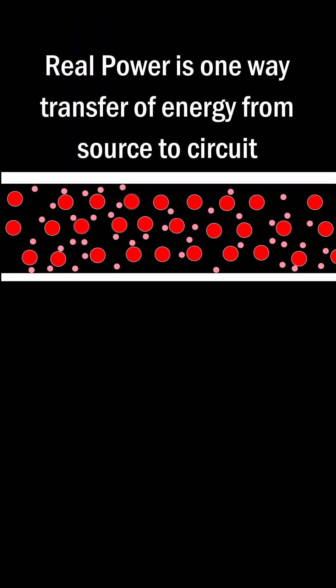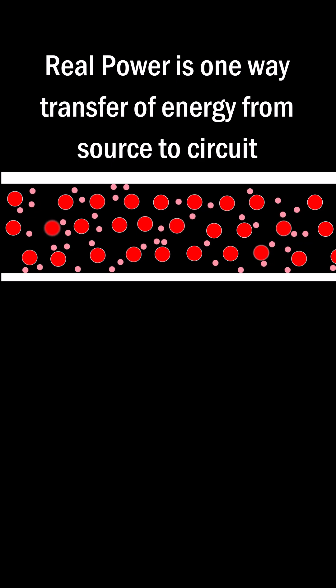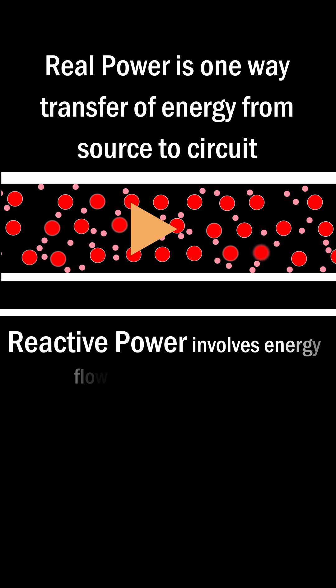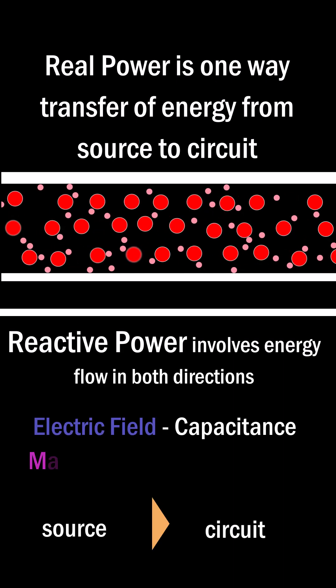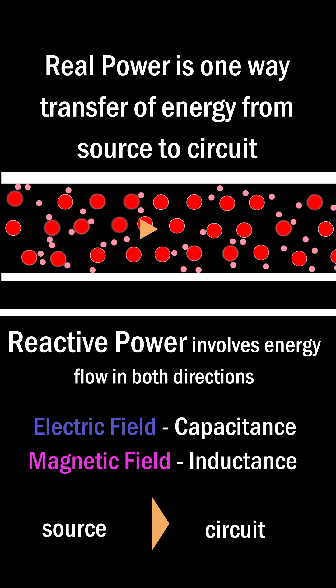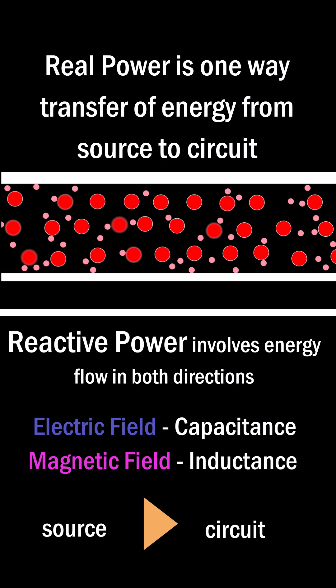So the mechanism for real power is due to electrons colliding with the ionic lattice, which is a one-way transfer of energy. But when we have the possibility to store energy in the circuit, as we do with the electric and magnetic field, energy actually flows both ways. And this is reactive power.